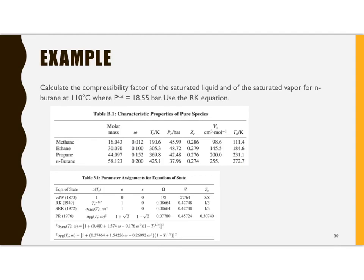So if we do this, I'm going to suggest that you go to the Redlich-Kwong equation because it's not as hard as some of the others. It'll get you some experience at doing this. And you need to pause this. What we want to do is calculate the compressibility factor, so that's z, for the saturated liquid and the saturated vapor. And do this first for the saturated vapor for n-butane at 110 degrees C, where P sat is 18.55 bar, and use the RK equation.